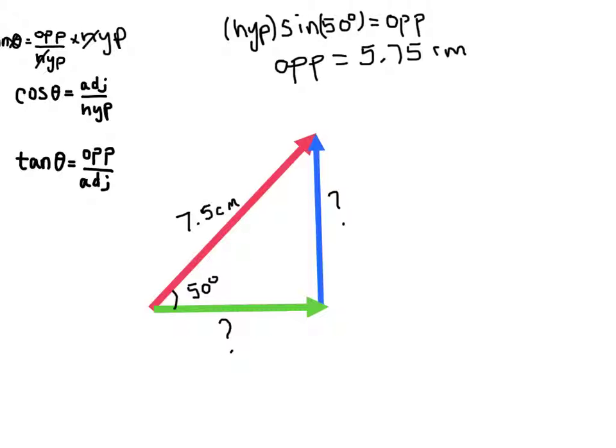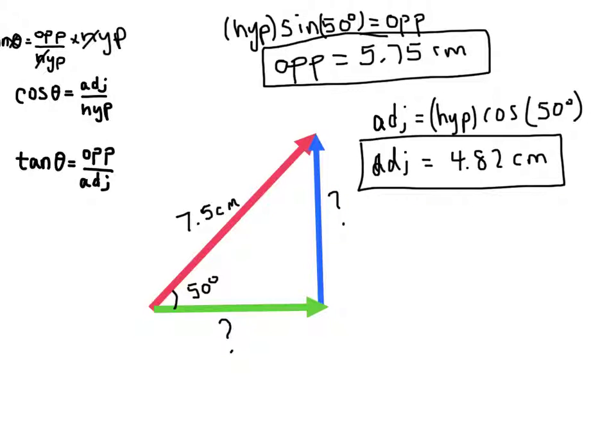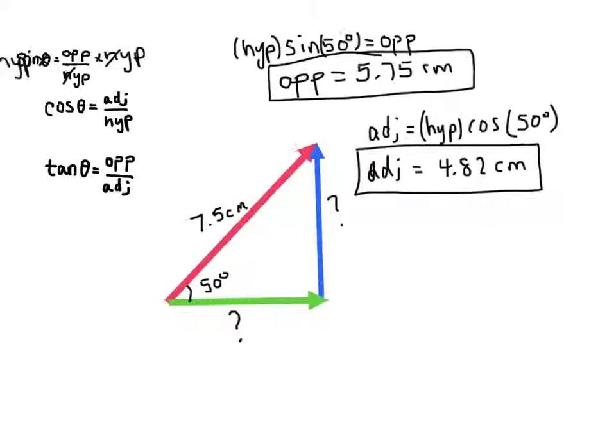For the green side, I'm going to rearrange to solve for the adjacent side. The adjacent side equals the hypotenuse times the cosine of 50 degrees. The hypotenuse is 7.5, so I plug that into my calculator and get 4.82 centimeters. That's the green side. These are the two components of the red vector. By splitting it into its components, I took the x and y portions of that arrow. And that is vector components.